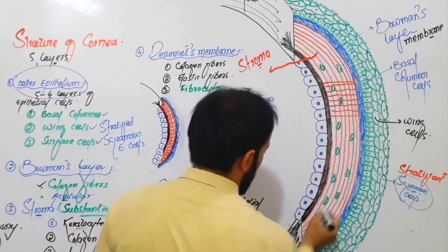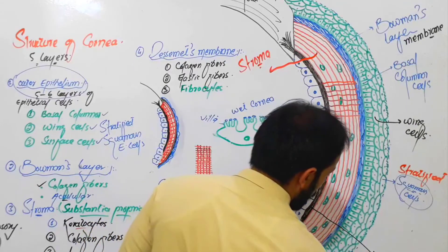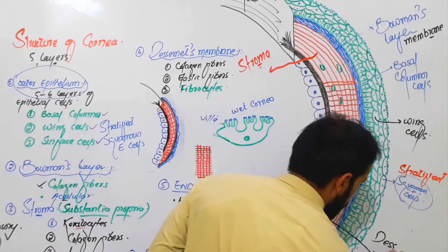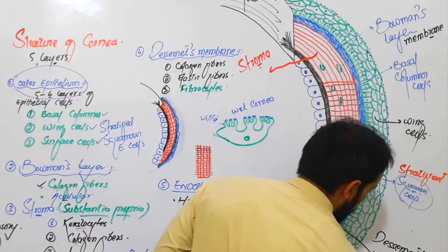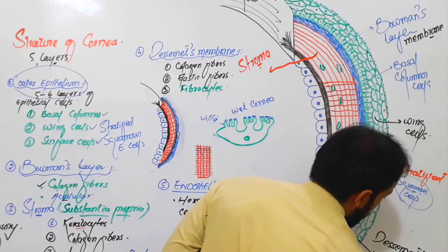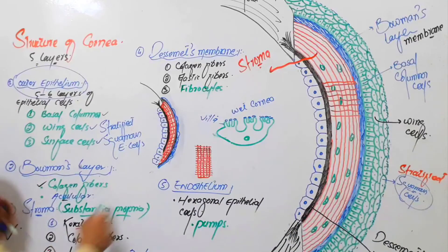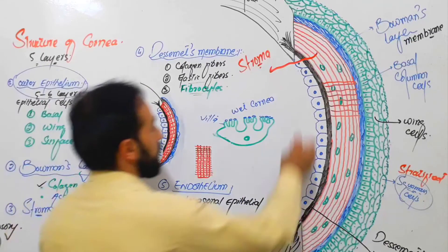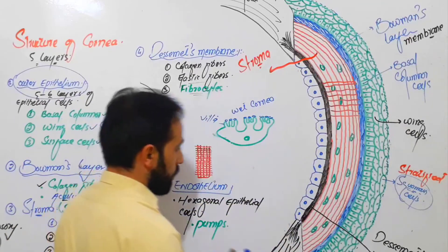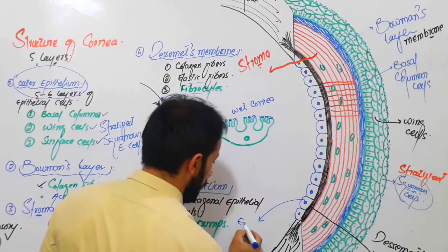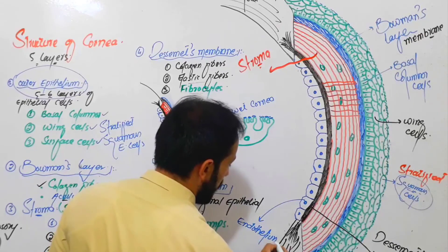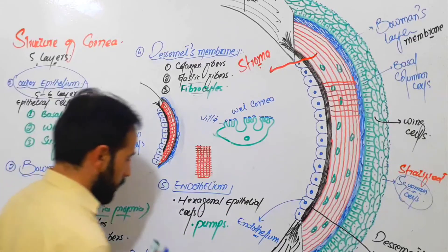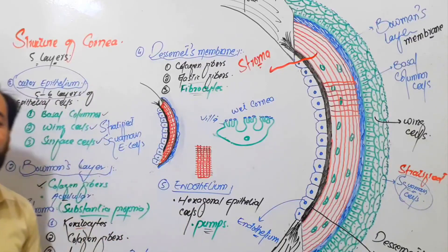The fourth layer — the black layer — is called Descemet's membrane. Descemet's membrane is very important and it contains fibrocytes, elastic fibers, and collagen fibers. Then the innermost layer is called the endothelium, which is composed of hexagonal-shaped epithelial cells, and their function is to perform the role of pumps.